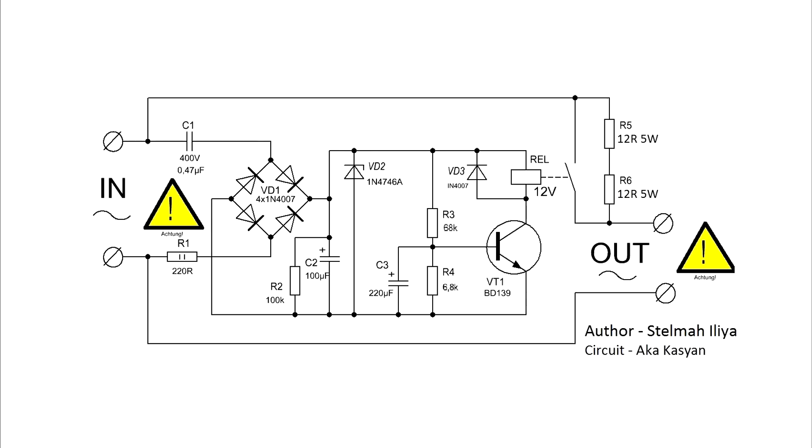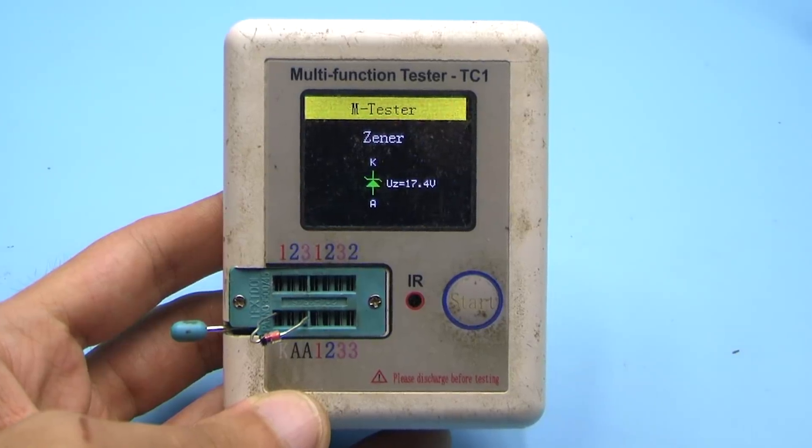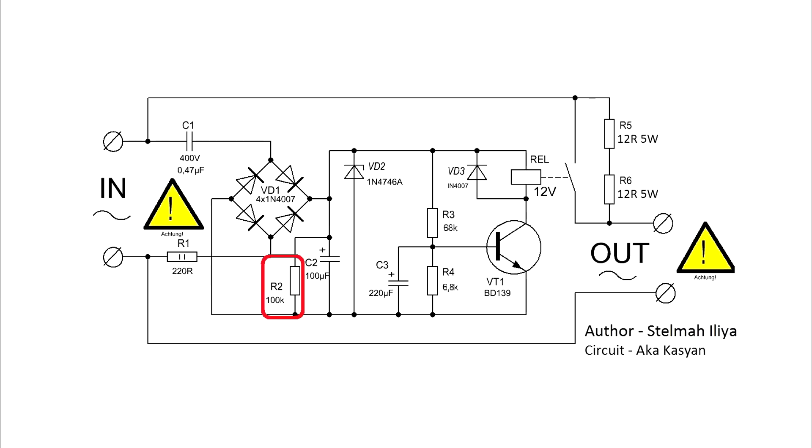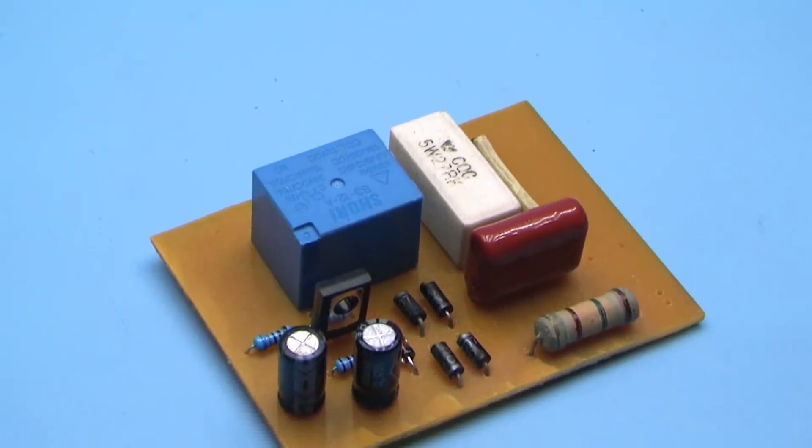Then the voltage is rectified by the bridge and smoothed by a capacitor, in parallel to which a zener diode and a high resistance resistor are connected. The zener stabilizes the output voltage at the level of 18 volts and extinguishes everything superfluous. The resistor discharges the capacitor after disconnecting the circuit from the 220 volt mains, providing a quick release of the relay contacts.